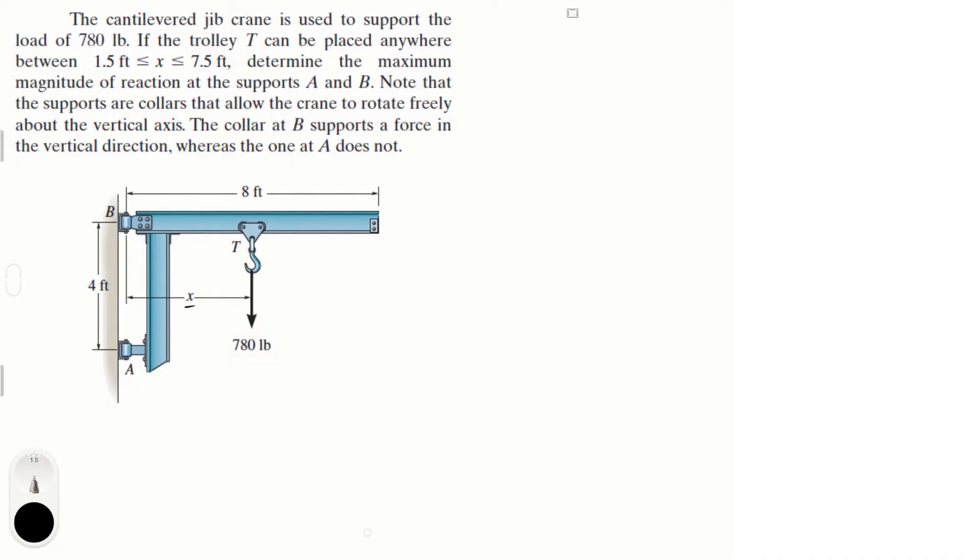Determine the maximum magnitude of reaction at supports A and B. You got to note that the collars can rotate freely about the vertical axis, which means that the collar at B supports a vertical reaction but the collar at A does not.